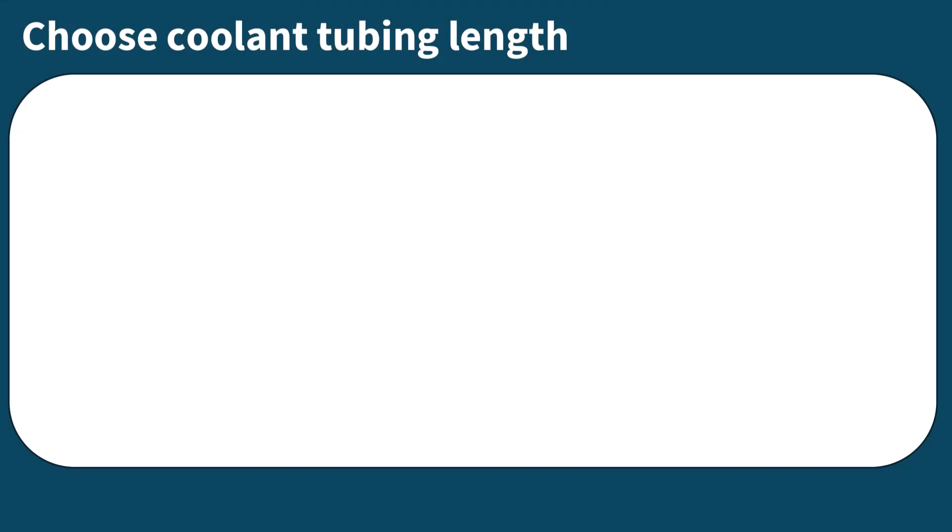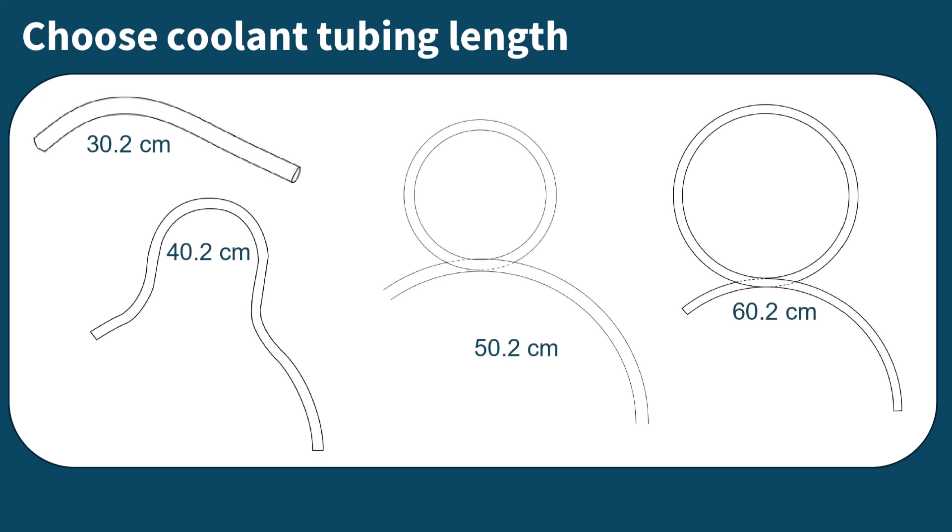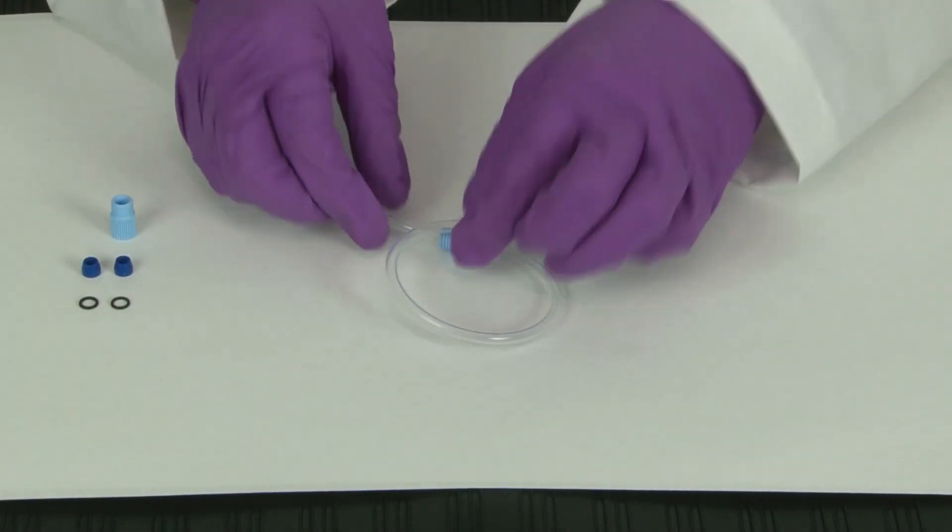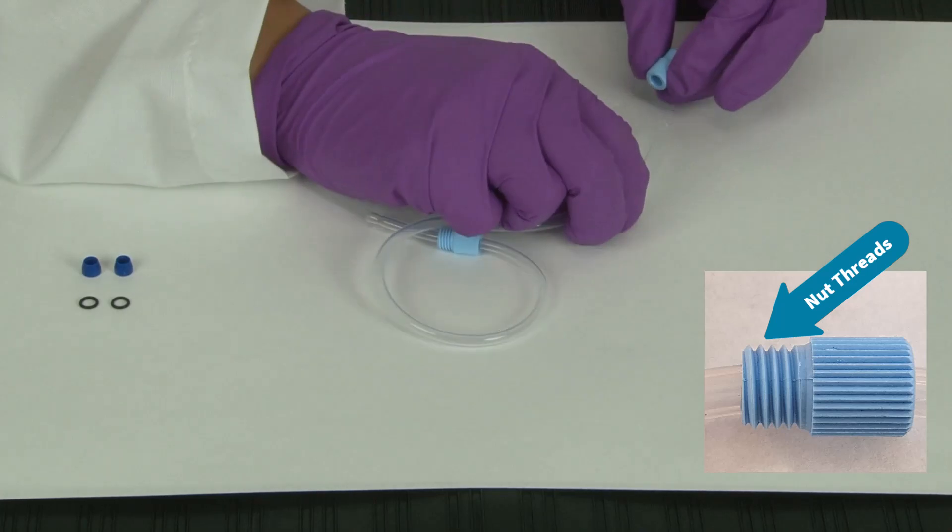Next, choose the proper length of coolant tubing to correspond with your capillary length. Then add the light blue nut so that the nut threads face the end of the capillary tubing.